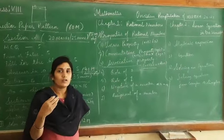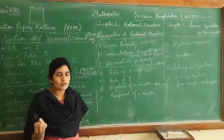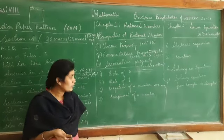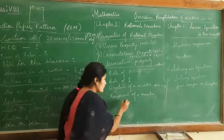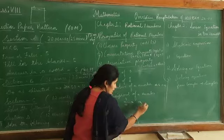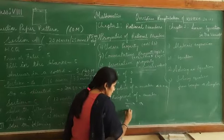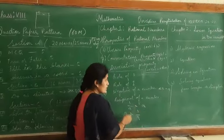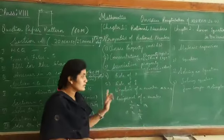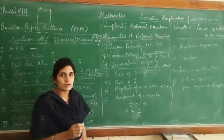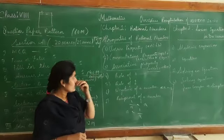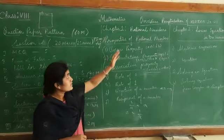Reciprocal of a number: the numerator goes to denominator and denominator goes to numerator. For example, if 1/a is given, the reciprocal is a; if a is given, the reciprocal is 1/a. This is also called multiplicative inverse. All the problems in the exercise are based on these concepts.